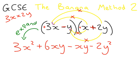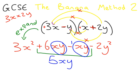Now we have to do the simplified part. So 6xy take away xy. I want you to think about this xy as one thing. So 6 of this thing, take away one of these things, is going to give us 5 of these things. Which gives our final answer 3x squared plus 5xy take away 2y squared. And that has been simplified.